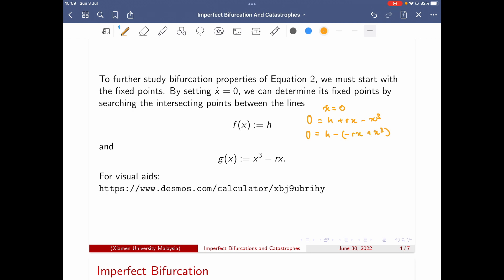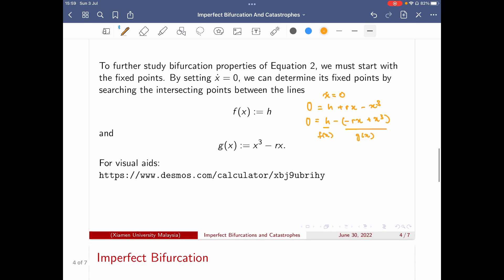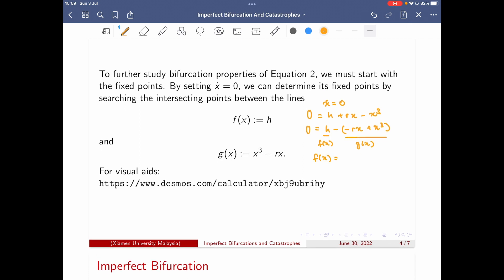So here will be rx plus x cubed, then setting this to be f(x) and this to be g(x). So as this tool, when f(x) equal to g(x), the intersection will be the location of where the fixed point will be.